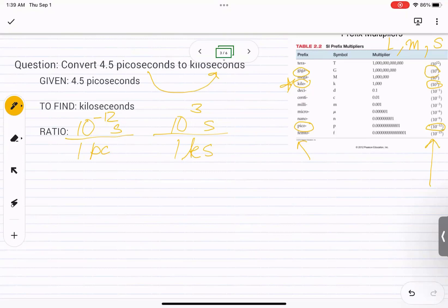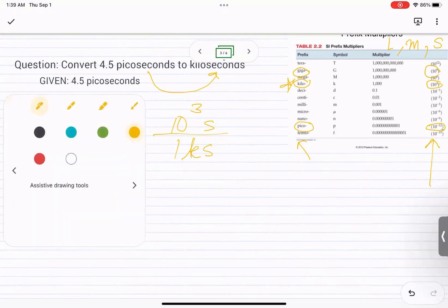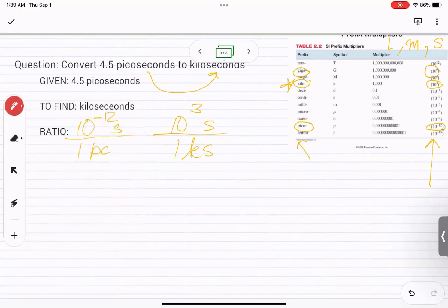So once you've had that, let's think of the path we are going to take. We are actually going to go from picoseconds to seconds, which is the base unit. And from there, we are going to kiloseconds.